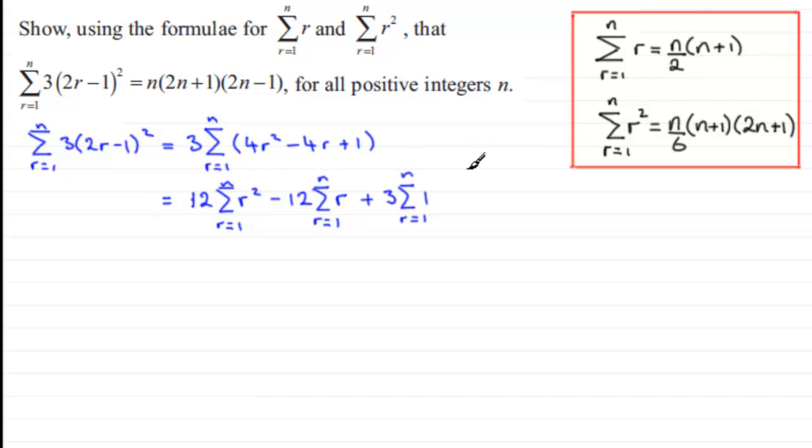Now we can pick up on the formulae that we've got up here. So for the first one we've got 12 then multiplied by n over 6 multiplied by n plus 1 times 2n plus 1. And for the last one when we've got 3 multiplied by sigma 1, if we sum up 1 n times we're going to get n.